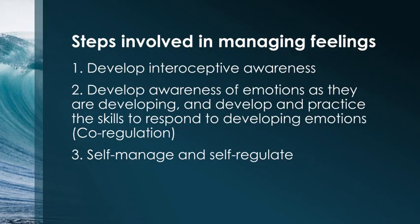There are a number of steps involved in learning to manage feelings. The first is to develop interoceptive awareness, then to develop awareness of emotions and feelings as they're developing. Once you've done that, you can develop and practice the skills required to respond to developing emotions, at which stage you need co-regulating, and then finally you can learn to self-manage and self-regulate.